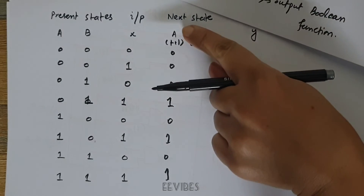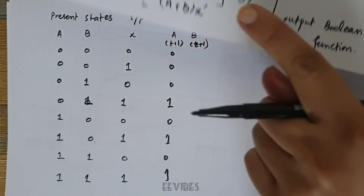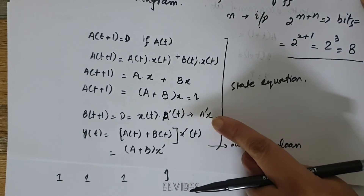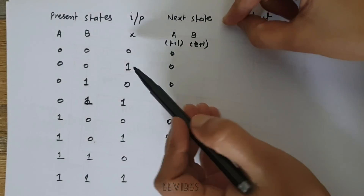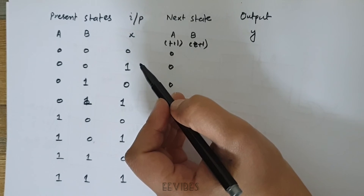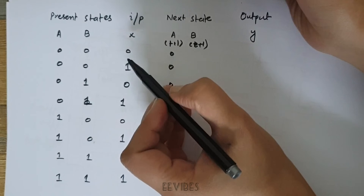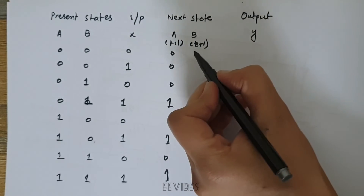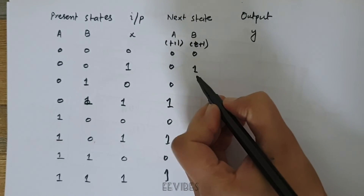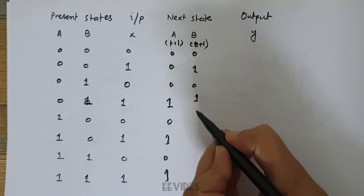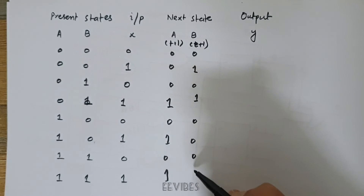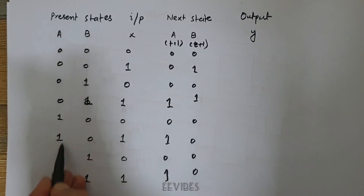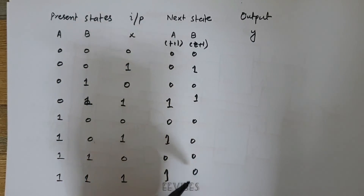Now let's determine the next state of flip-flop B, whose value equals A'·X. This will generate output 1 where X = 1 and A = 0. Looking at the table, the values for B(t+1) are: 0, 1, 0, 1, then 1, and the remaining values are all 0. For the last four rows, A' generates 0, which is why I have written zeros there.